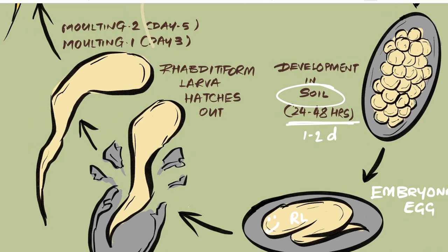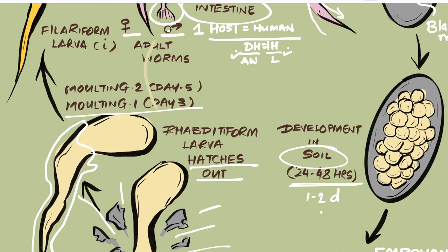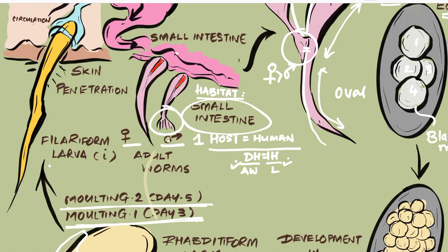The larva will then break the egg shell and hatch out, after which it undergoes molting. Molting is the removal of the outer skin of the larva. The first molt occurs on day three, and the second molt occurs on day five. After the second molt, it converts to a more mature form of larva known as the filariform larva, which is the infective form.